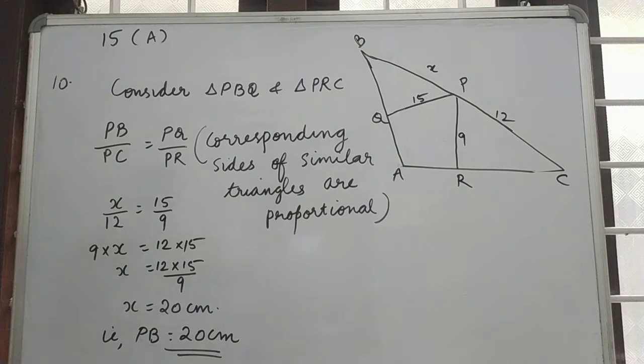Given angle BAC of triangle ABC is obtuse. Also given AB is equal to AC, PC is equal to 12 cm. PQ and PR are perpendiculars to sides AB and AC. Then given PQ is equal to 15 cm and PR is equal to 9 cm.